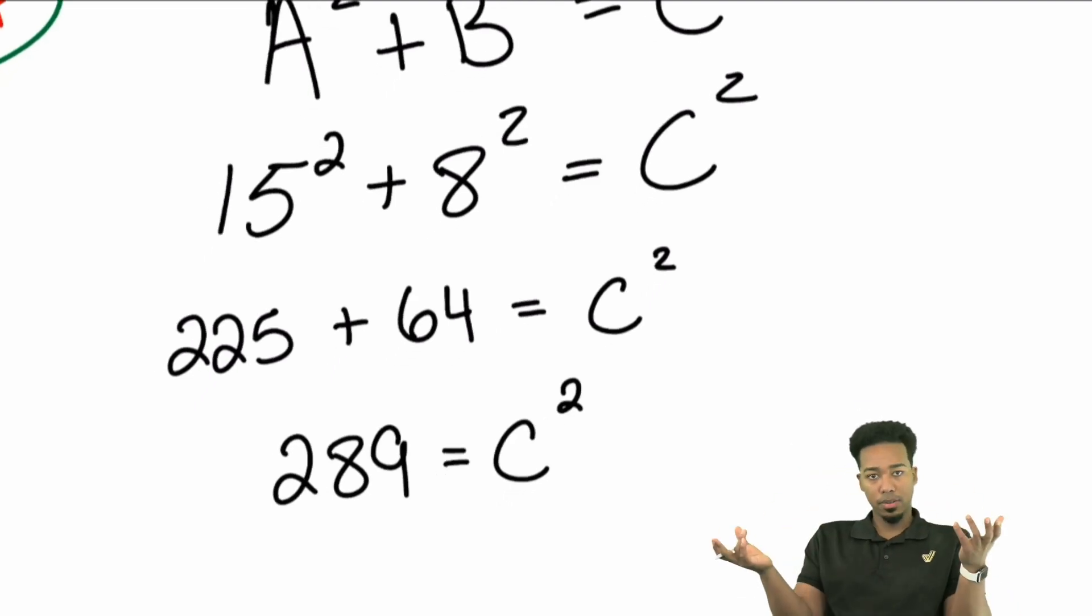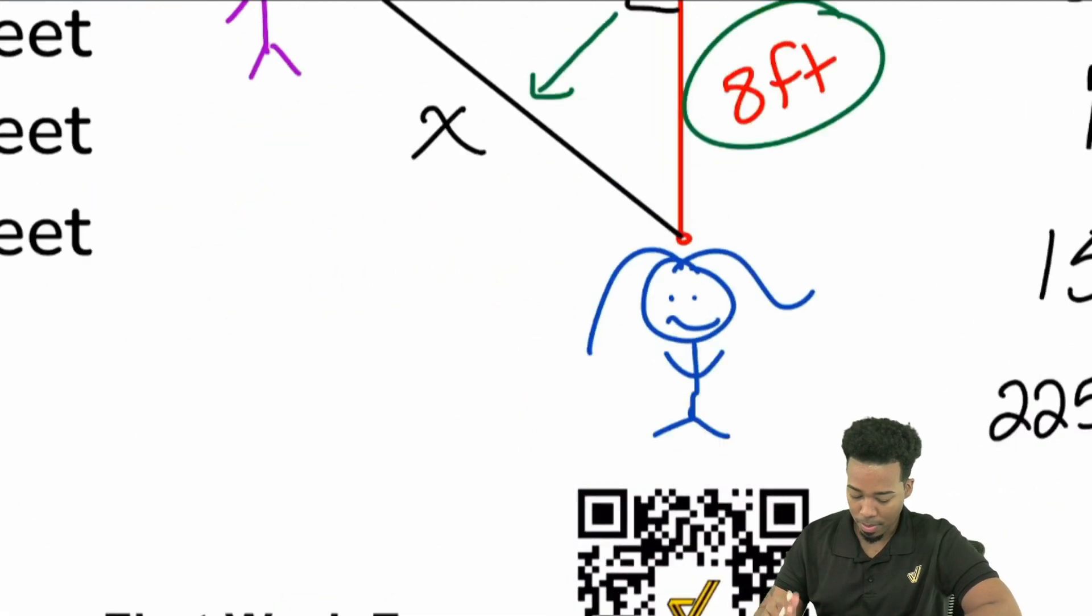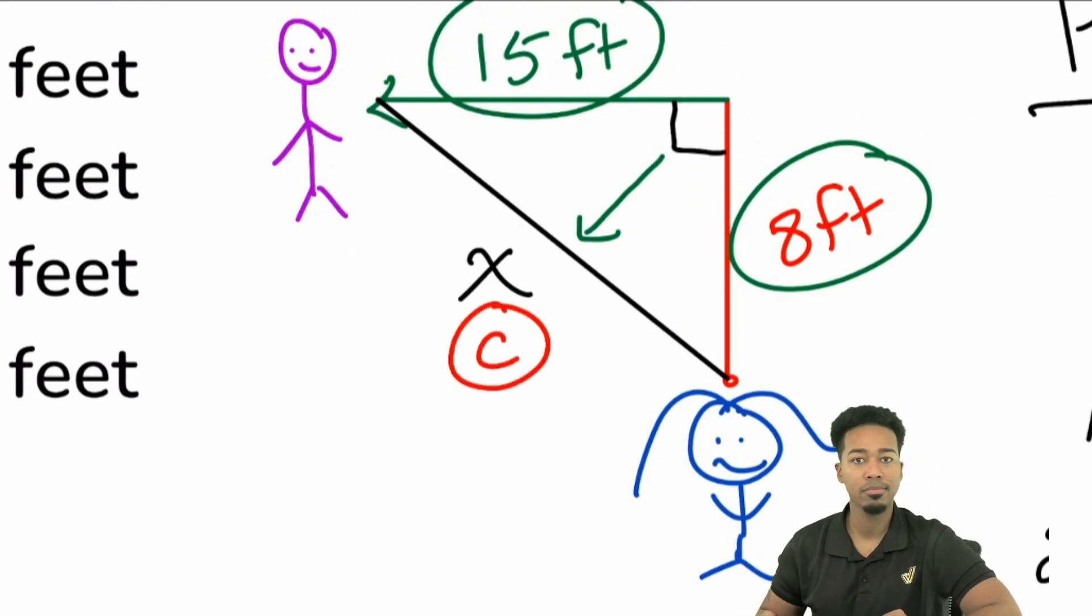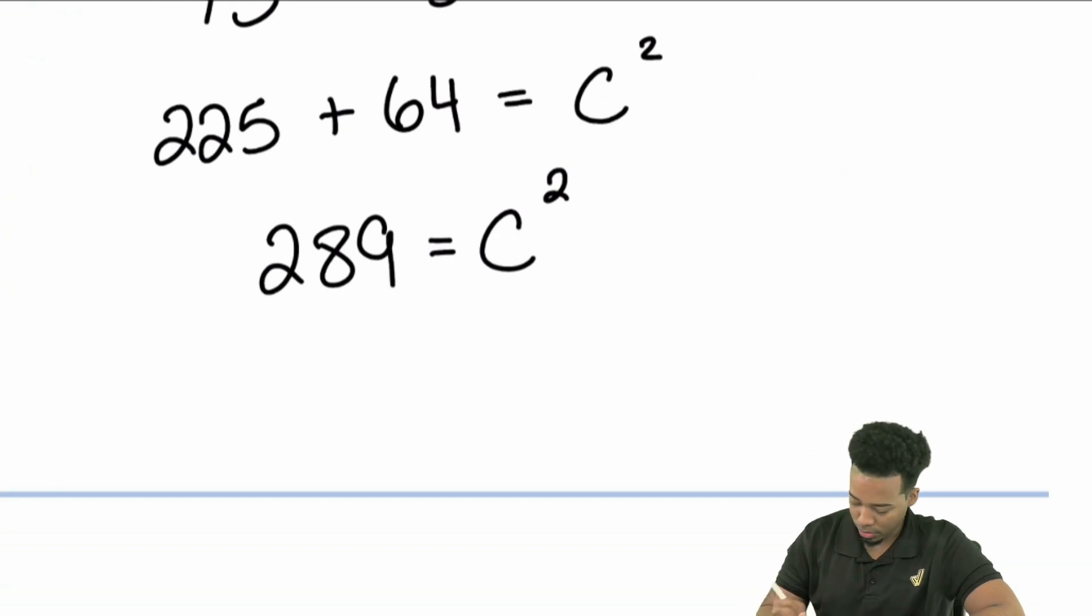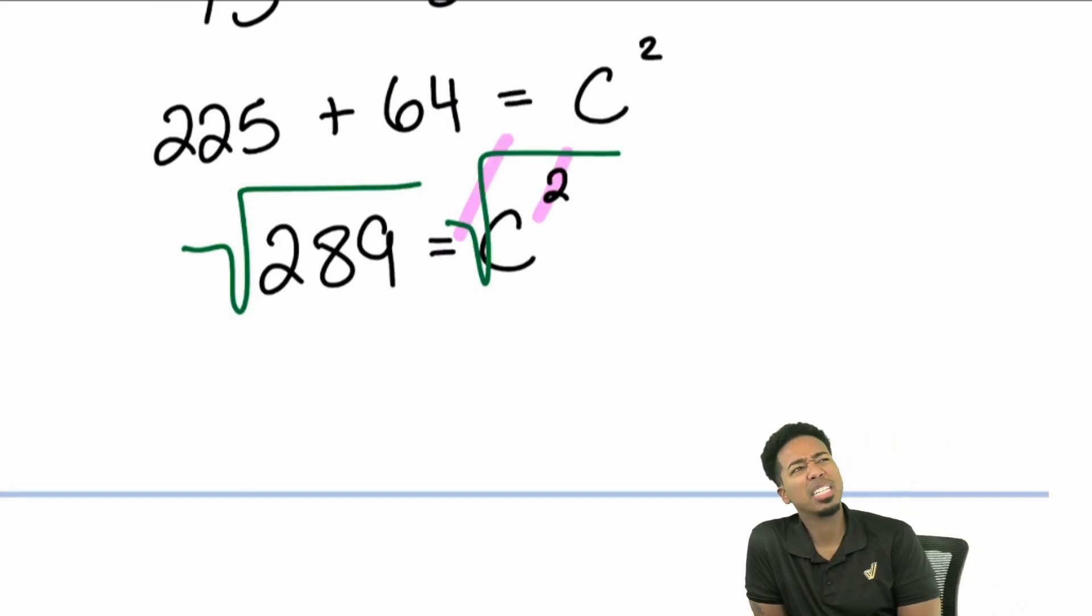Now what do we do next? The last thing we're going to do is take the square root of both sides because we need to get rid of the square here on that c. We got to get c by itself. Remember that this is going to be the same as c. So coming back here to the square root, that's what we're going to do to both sides. And we see that it's going to cancel out. Now we have to play a little bit of a guessing game.